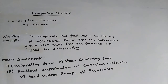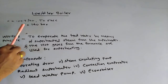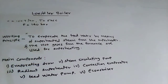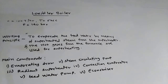The capacity of the Löffler boiler is 100 tons per hour at a pressure of 140 bar and a temperature of 500 degrees Celsius. The working principle of the Löffler boiler is to evaporate the feed water by means of superheated steam from the superheater, and the hot gases from the furnace are used for superheating.